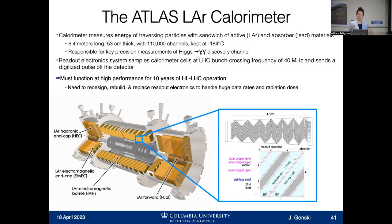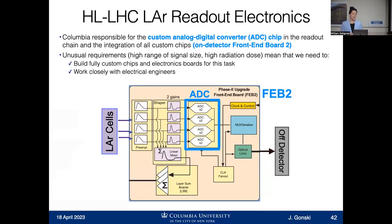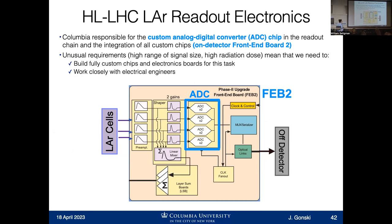This is the upgrade to the liquid argon calorimeter: to completely rebuild those readout electronics for handling the huge data rates and also the radiation dose. This is the part of the upgrade — building this electronic system — that Columbia is playing a leading role in. This is a block diagram of what the readout electronics look like right on the detector — boards sitting right on the machine. Here at Columbia, we're responsible for two different elements: we're designing one of the chips that goes on this board — the ADC — and we're also building the entire front-end board, integrating a bunch of these chips together and making them talk to each other.